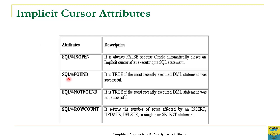We have already discussed that the implicit cursor attribute SQL%ROWCOUNT returns the number of rows affected by an INSERT, UPDATE, DELETE, or single-row SELECT statement. We can use SQL%FOUND and SQL%ROWCOUNT to get the status and number of rows affected by the last executed DML statement in a PL/SQL block.